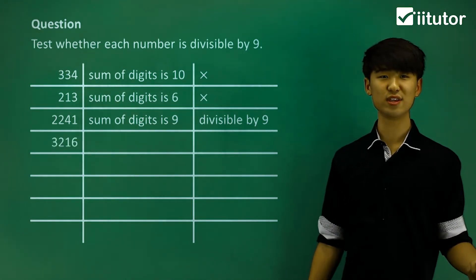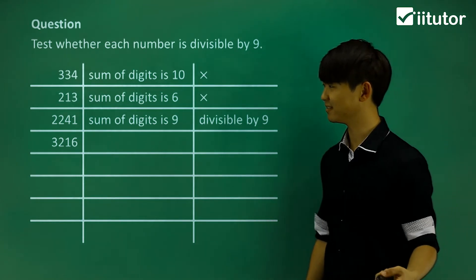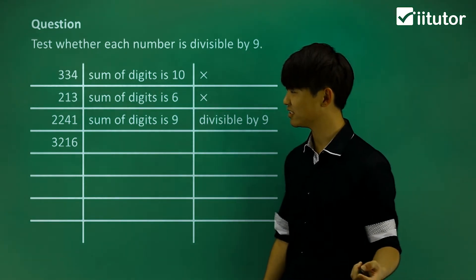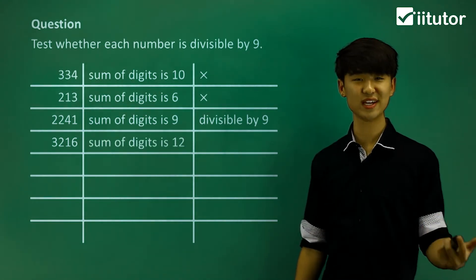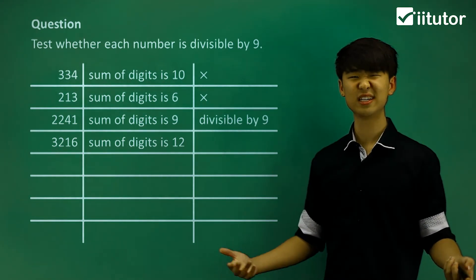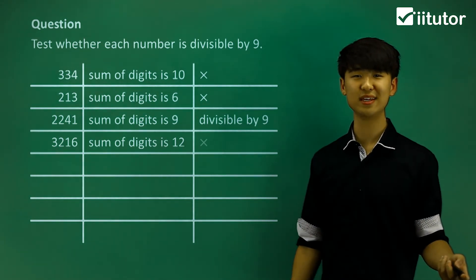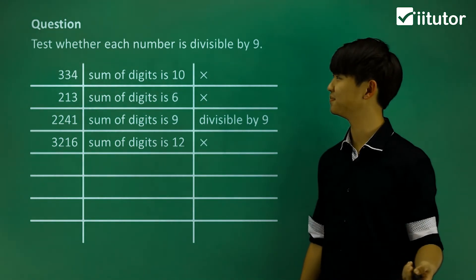3216. The sum of digits is 12. Now 12 is not divisible by 9, so this number here is not divisible by 9.